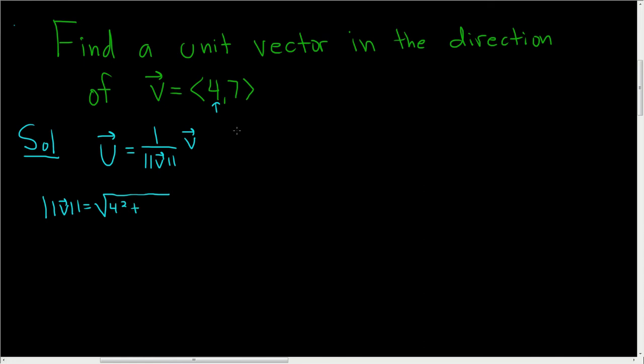You add, and then you square the second component. So you end up with 16 plus 49, and that's the square root of 65.